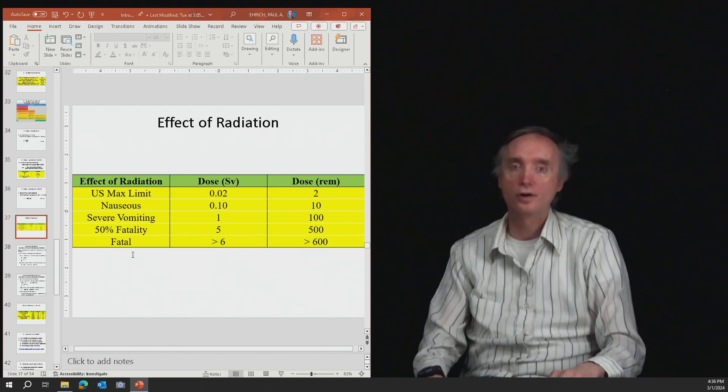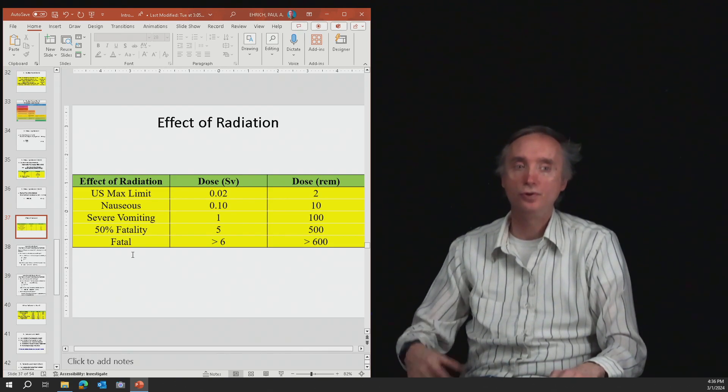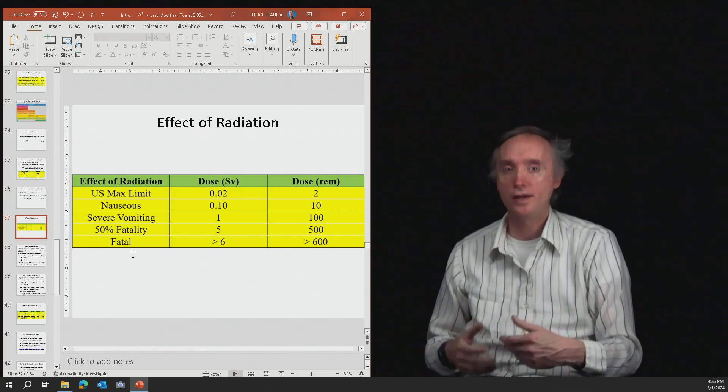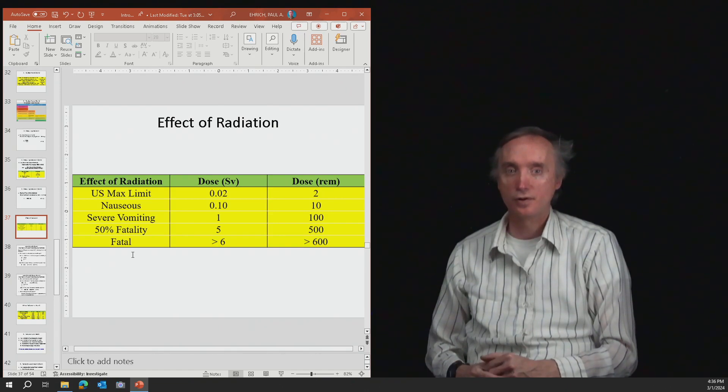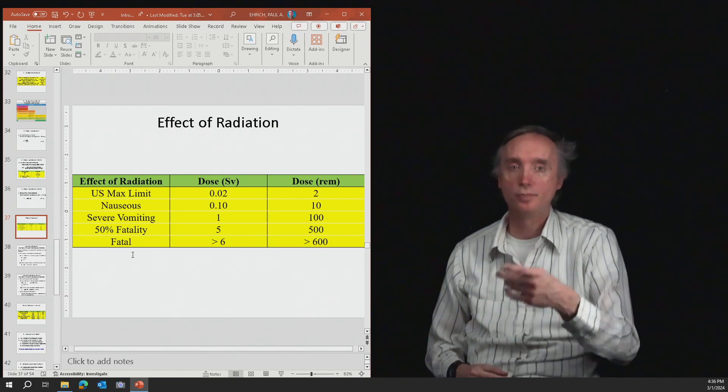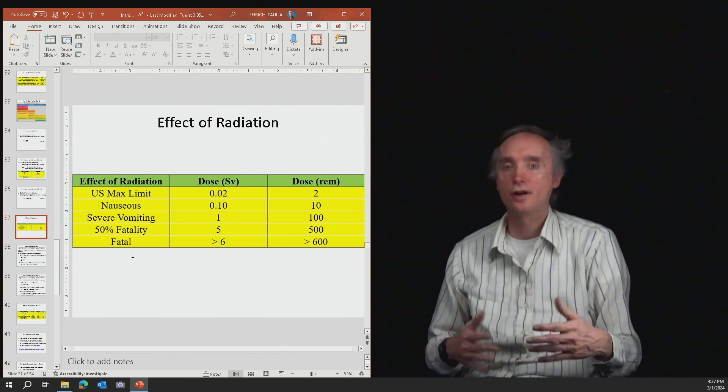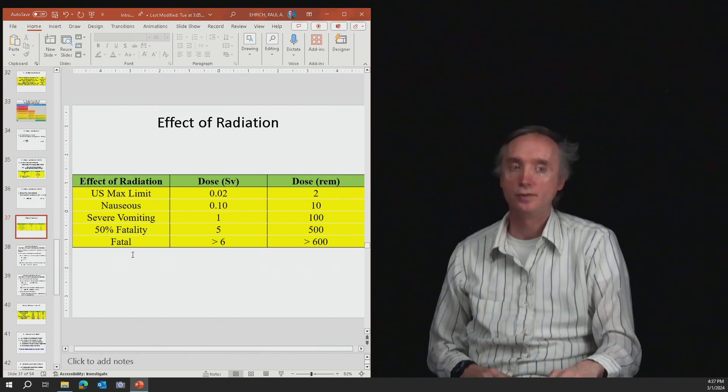So if you work at a nuclear power plant, you wear a dosimeter. And the dosimeter measures the amount of radiation that you get. And so if that dosimeter gets above 0.02, it's going to change color, and then you're not going to be allowed to work at the nuclear power plant anymore.